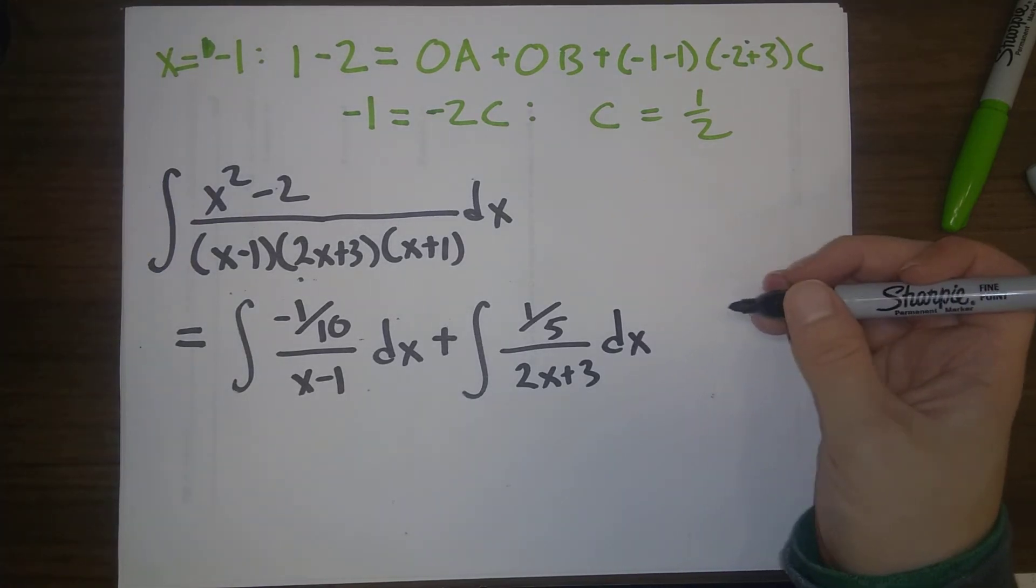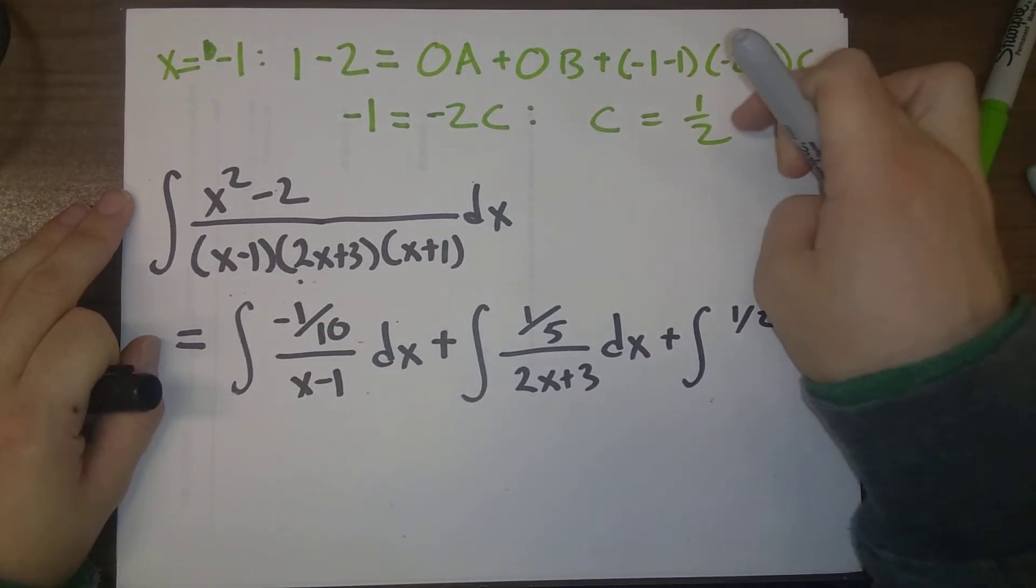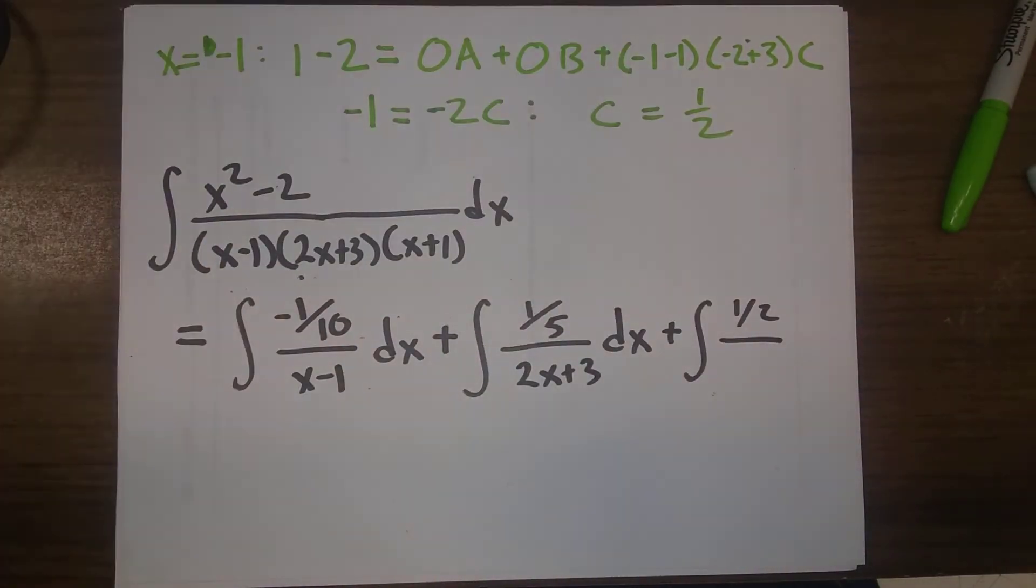And then, plus C is 1 half, we see that up there, and that has to go over x plus 1.